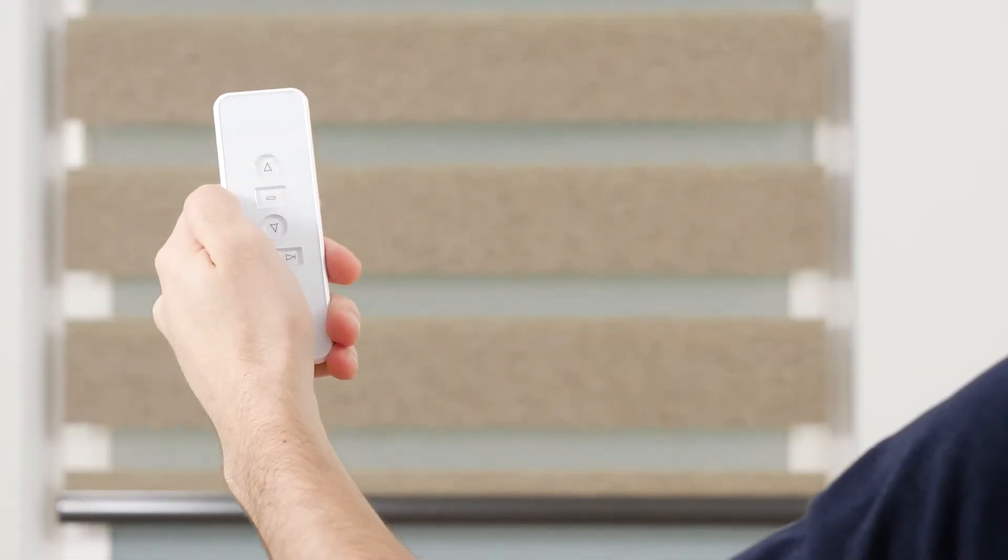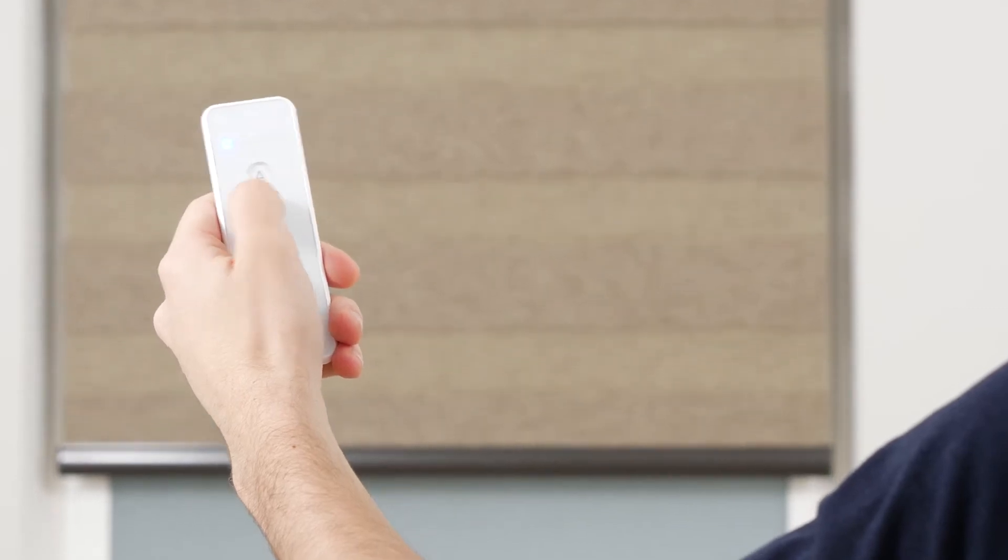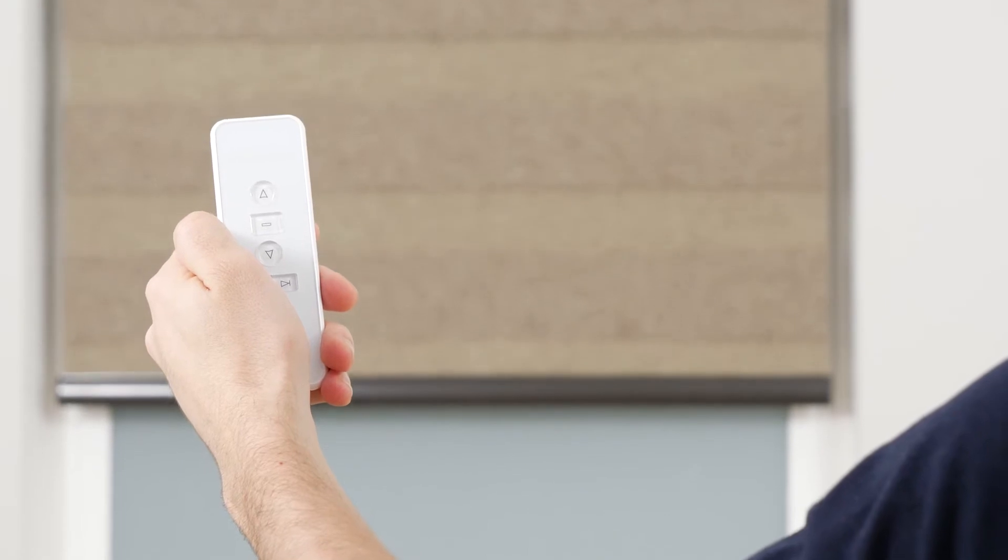Press the up or down button to move the shade up or down to the nearest saved position. Press the stop button to halt the shade. Press and hold up or down for two seconds to move the shade directly to the top or bottom limits.